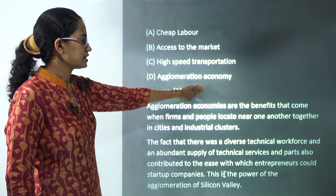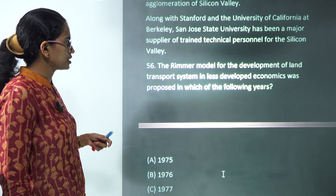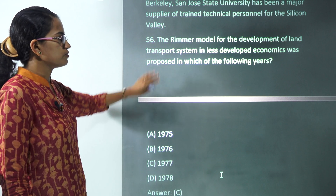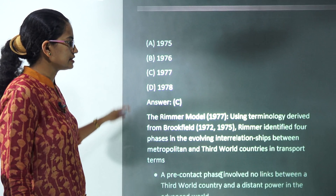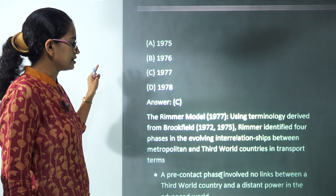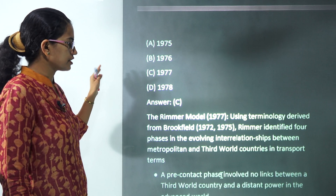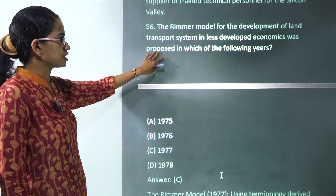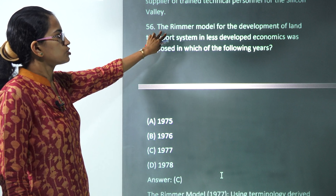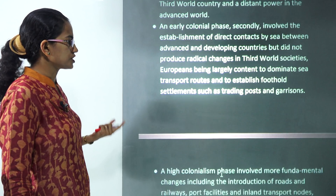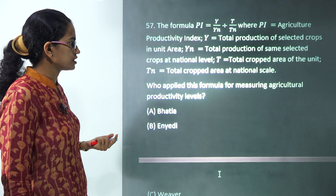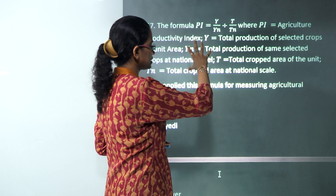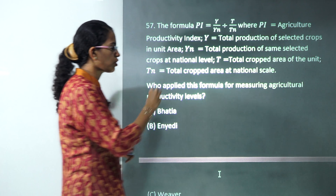The next is Remers' model, which was given in 1977. It basically talks about the inter-relationships between metropolitan and third-world transportation systems. This is again an important question from transportation geography.